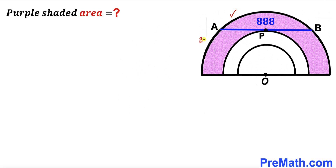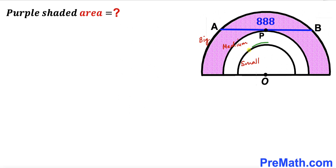I am going to label the biggest semicircle with radius uppercase R, the middle one as our medium semicircle, and the smallest one as the small semicircle. I am going to label the medium semicircle's radius as lowercase r.